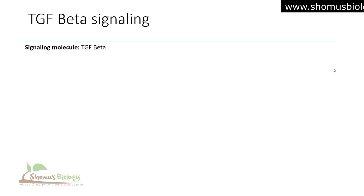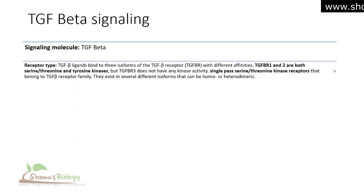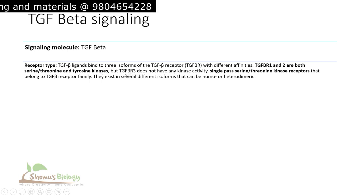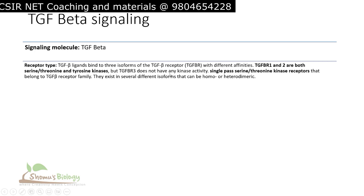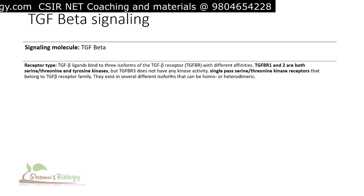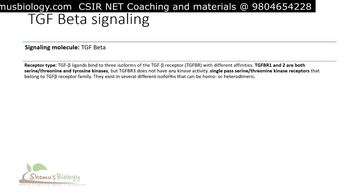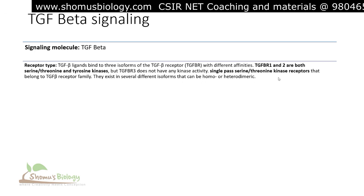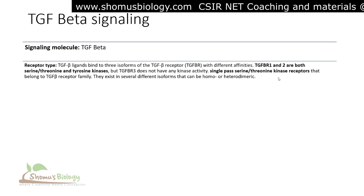The signaling molecule is transforming growth factor beta. The TGF-beta ligand binds to three isoforms of TGF-beta receptor: TGF-BR1 and TGF-BR2 are both serine-threonine and tyrosine kinases, but TGF-BR3 does not have any kinase activity. They are all single-pass serine-threonine kinase receptors belonging to the TGF-beta receptor family, existing in several isoforms that can be homo- or heterodimeric.